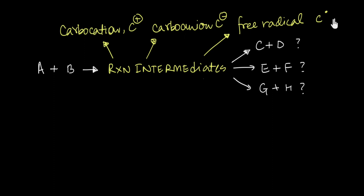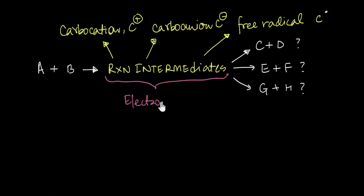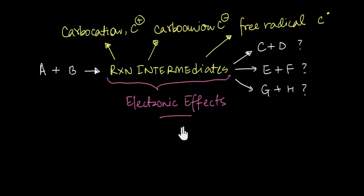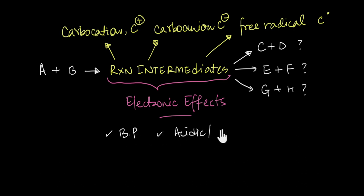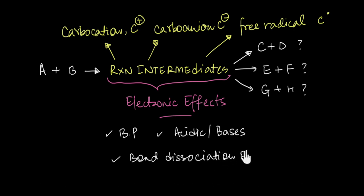Coming back, we have seen how the stability of reaction intermediates plays a crucial role in determining whether we get a particular product or not. One of the most fundamental things we'll focus on in this series is understanding the various electronic effects that can stabilize or destabilize a reaction intermediate. Beyond that, these electronic effects are also responsible for the physical and chemical properties of organic molecules — things like boiling point, acidic or basic strength, bond dissociation energy, and many more can be understood by figuring out the underlying electronic effects present within the molecule.